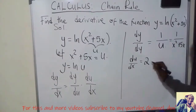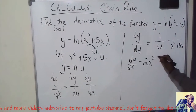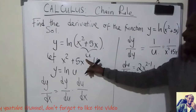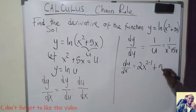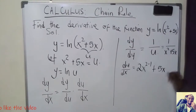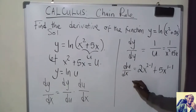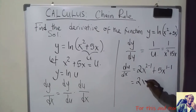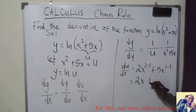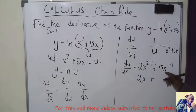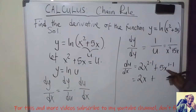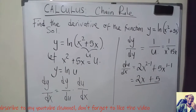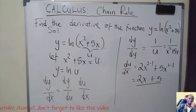So x² differentiates to 2x (power 2 reduced by 1 gives x to the power 1). For 5x, the power is 1, so 1 × 5 = 5, and x to the power 1 minus 1 = x⁰ = 1, giving 5. Therefore du/dx = 2x + 5.